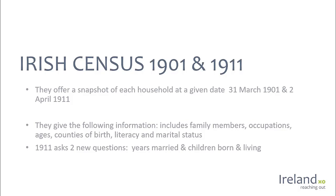The censuses give us a comprehensive picture of what life was like in the household — economically, socially — and other information about the house beyond just who was there and what age they were. The 1911 census asks two additional questions that can be very helpful. The 1901 census gives information about family members: occupations, ages, counties of birth, literacy, and whether people were able to read and write. The 1911 census adds the number of years married and the number of children born and still living.